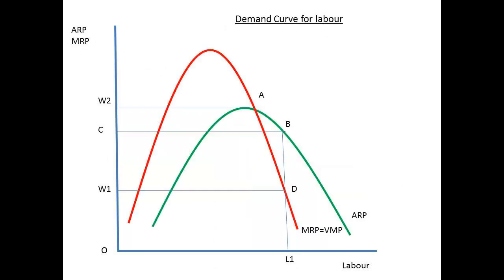The map shows the marginal revenue product, MRP curve, for a perfectly competitive firm, and the average revenue product, ARP. The MRP curve cuts the ARP curve at its maximum point. At OW1, the firm hires L1 units of labour. The average revenue product, ARP, will be L1B. The firm has a monetary surplus equal to BD, which can be used to meet other costs of production. The ARP and MRP intersect at A. The firm will not pay a wage above OW2, or the wage would exceed the average revenue product, and the firm would not be able to cover its variable costs.